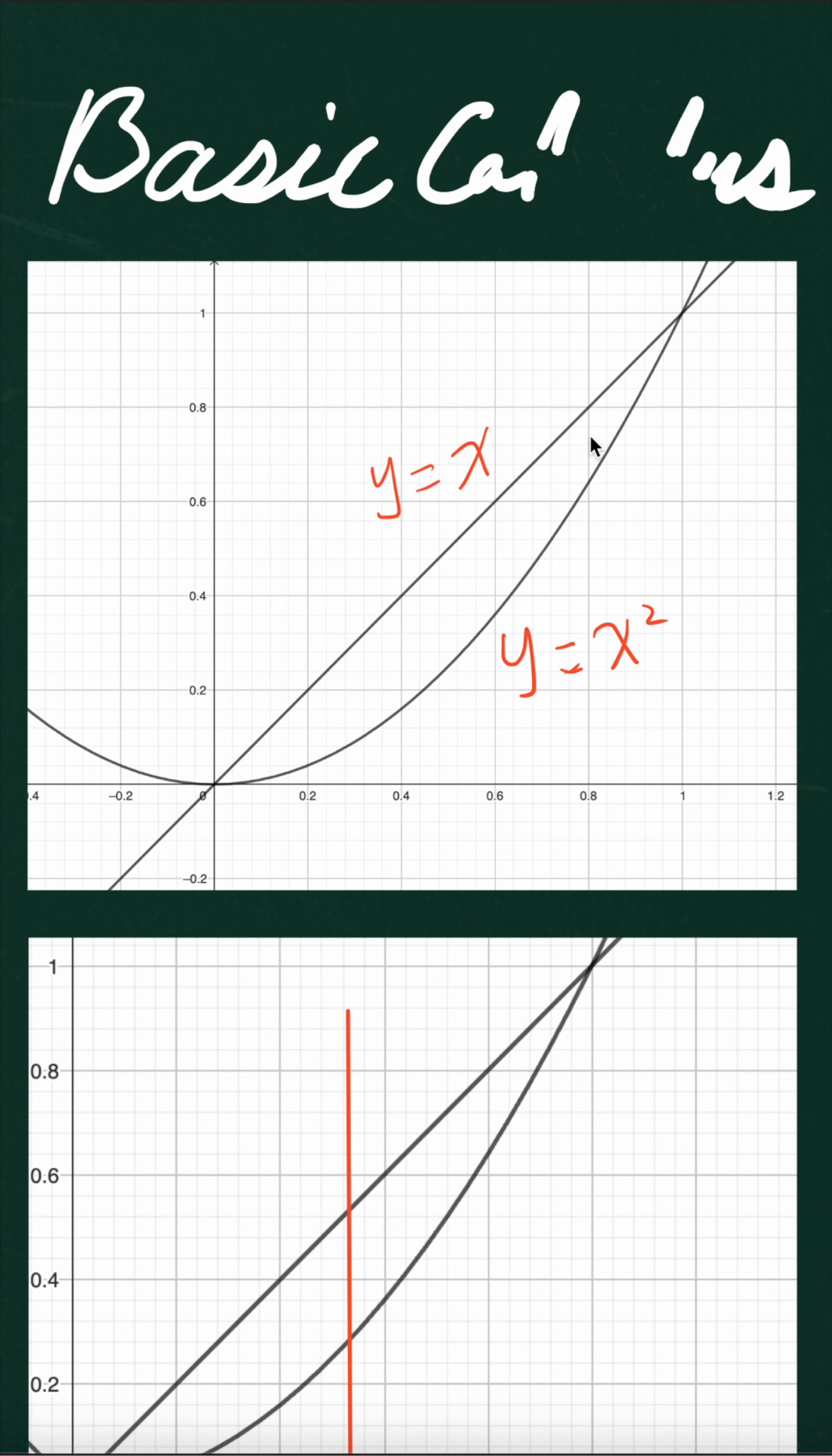So these two curves enclose a shape over here. I'm going to shade it out and then we're going to rotate this shape along the x-axis. So the question asks us to find the volume of this resulting solid from this shape rotating around x-axis.